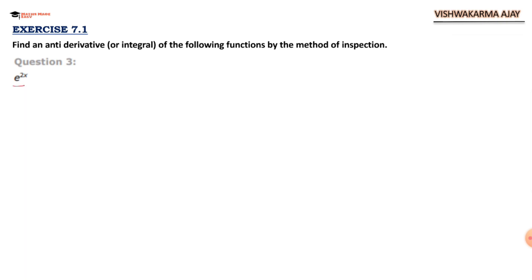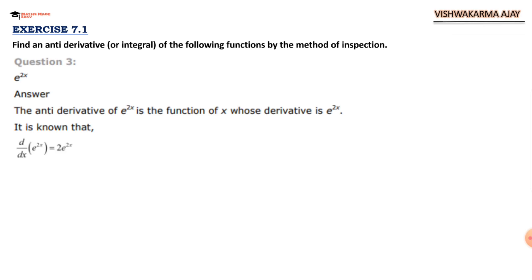Question 3: e raised to 2x — a similar kind of question. The derivative of e^(2x) is 2e^(2x), but we are interested in only e^(2x), so I am going to transfer this 2 to the other side. Therefore the antiderivative of e^(2x) is d/dx of (1/2 · e^(2x)), meaning our antiderivative is 1 upon 2 e raised to 2x.